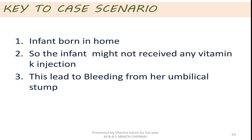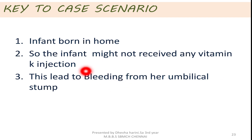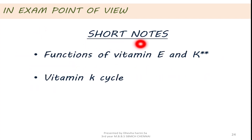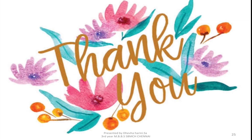So now we will see the case scenario diagnosis. The diagnosis to the case scenario is vitamin K deficiency. Key points: the infant was born at home so the infant might not have received the vitamin K injection. Not receiving the vitamin K injection leads to abnormal bleeding. So as soon as the infant is born, a vitamin K injection is needed. In exam point of view, the short notes can be the functions of vitamin E and vitamin K, and the vitamin K cycle along with the coagulation pathway. Thank you so much for your patience. Go back and refer your textbook — it will be easy to study now.